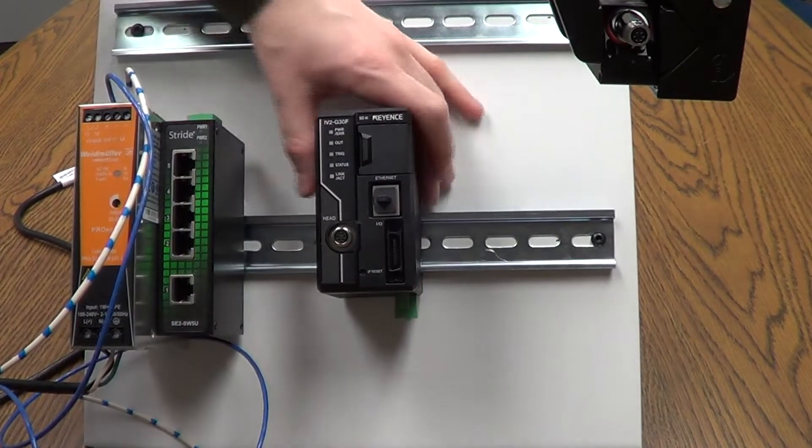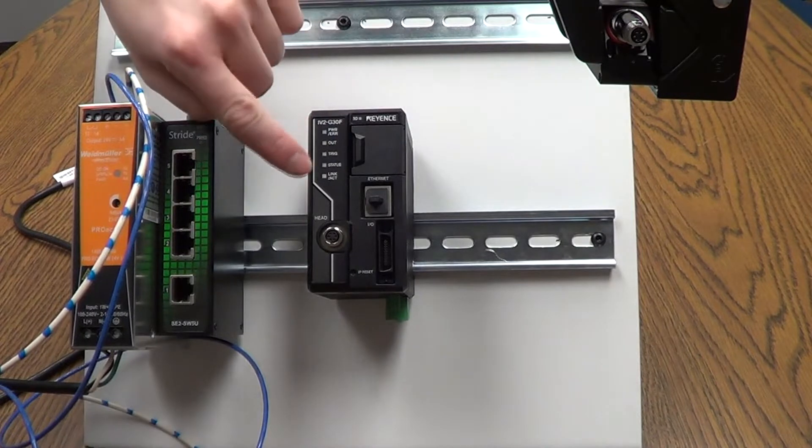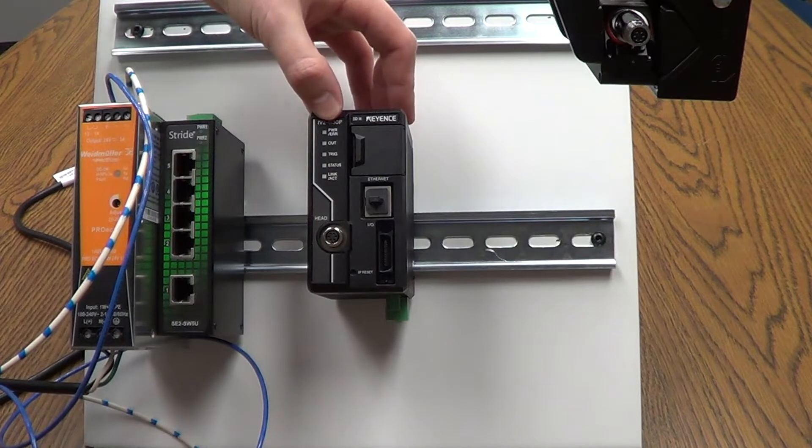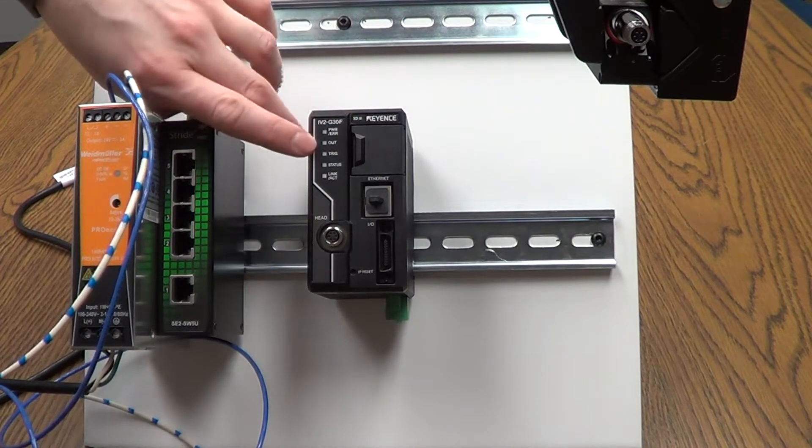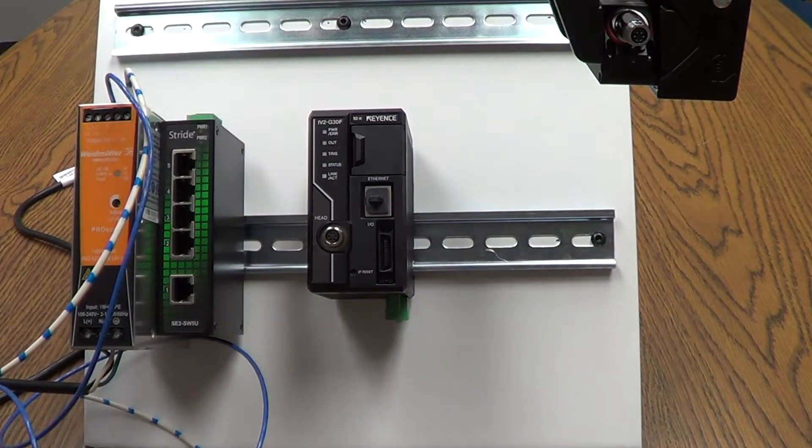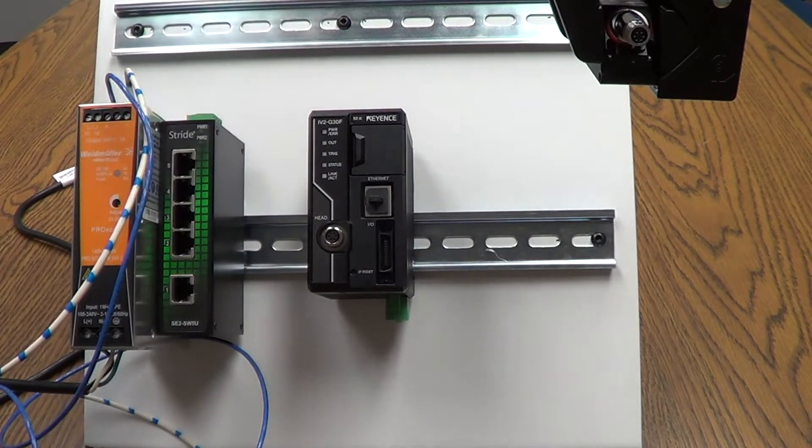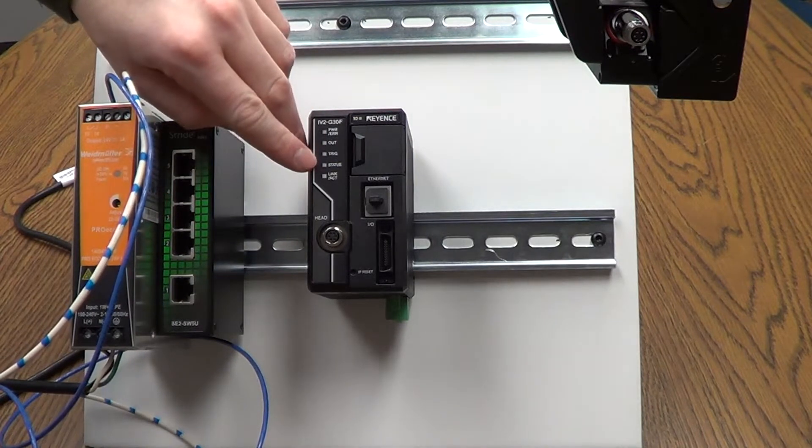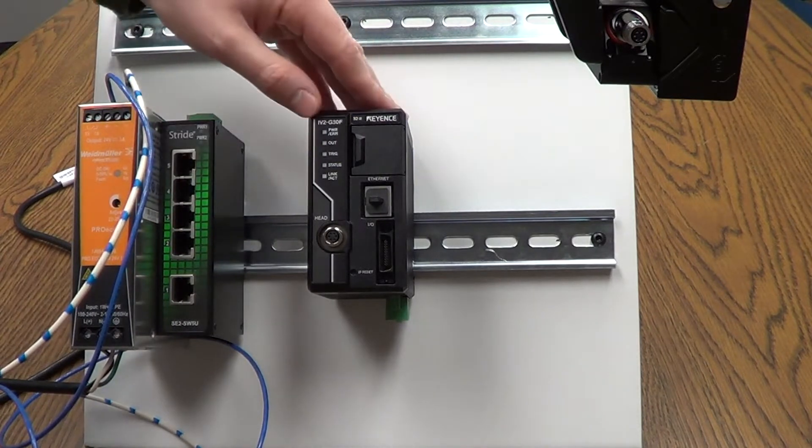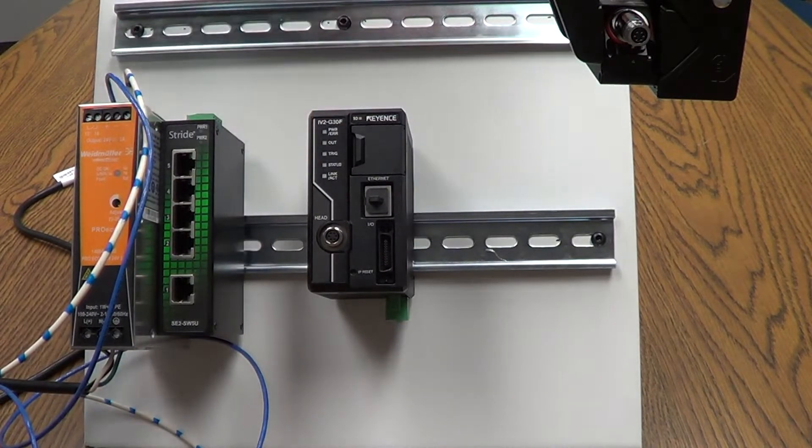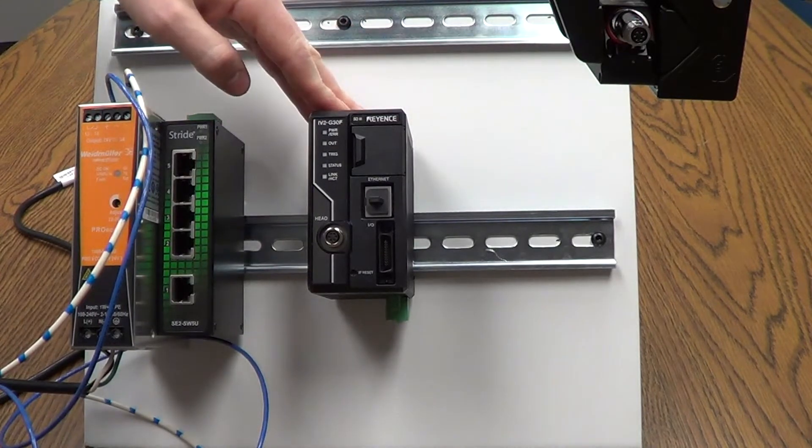On the front of the controller you'll see that you have five different LEDs: power and then error so obviously that light should be green. There will be times where it might be red and then you have an error on your controller. You'll have your output so that's going to flash whenever your output is sent through. Trigger, obviously every time the camera is triggered it's going to flash. Status, it should be a green light generally so that way we know that we've got a working function between our sensor head and our controller itself.